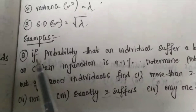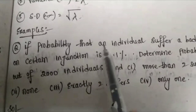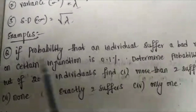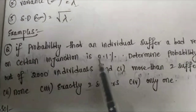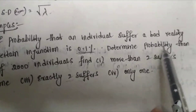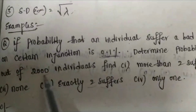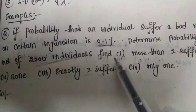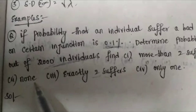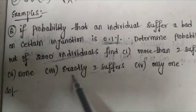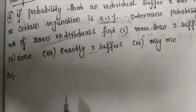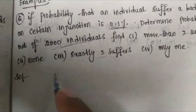Let us consider an example problem to understand Poisson distribution. The given problem is: if the probability that an individual suffers a bad reaction to a certain injection is 0.1%, determine the probability that out of 2000 individuals: more than two suffer, none suffer, exactly two suffer, and only one suffers.